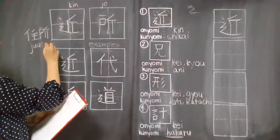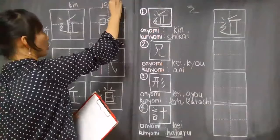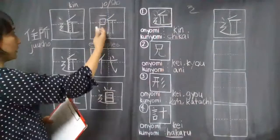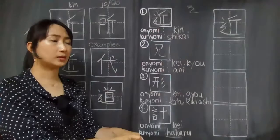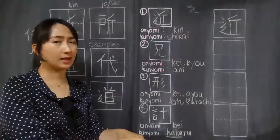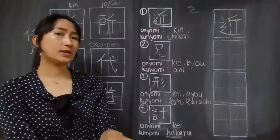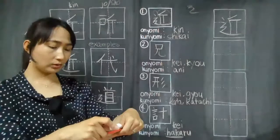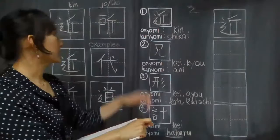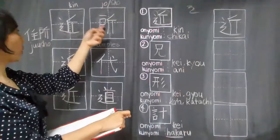Guys, this one you can also read as sho, jusho. Or you can also read this as tokoro. If you see this kanji alone, it means tokoro or place. For example, your friend wants to go with you, let's say go shopping or go somewhere else. So when this is alone, you can read this as tokoro, place, or you can also read this as ju and sho.